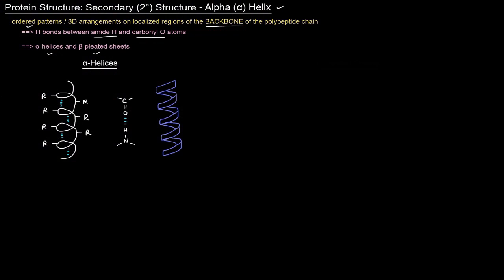Alpha helices can have their structure disrupted. There are a number of things that can disrupt the structure, including heat, bulky side chains, electrostatic interactions, and the amino acid proline specifically.